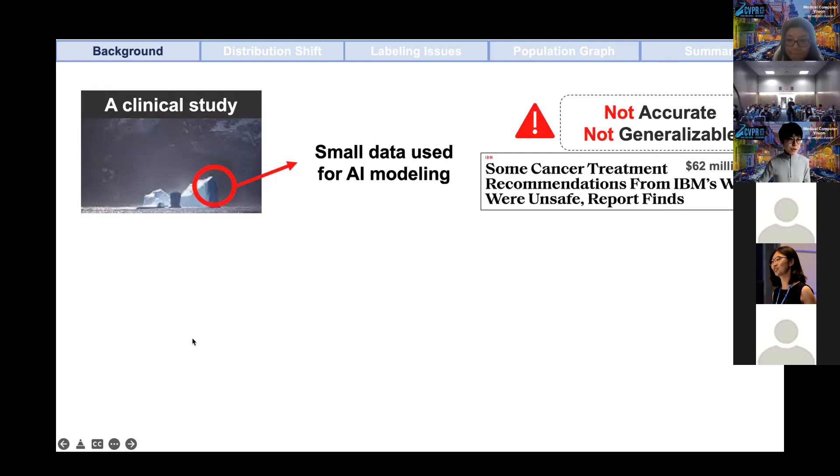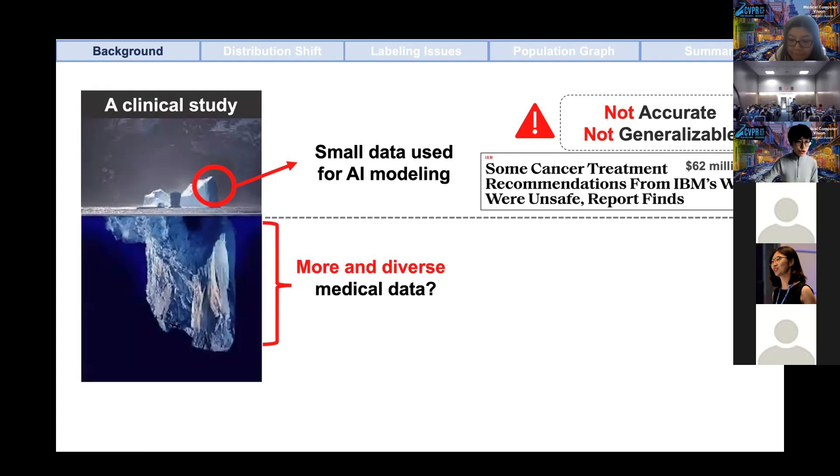We found it very difficult to persuade clinicians to trust AI models because most clinical AI models are trained from a small amount of data, and these models are typically not accurate and not generalizable. For example, IBM spent more than $60 million to fund an AI-based cancer treatment recommendation system. However, they still failed because their system was only trained on a few hundred thousand patients.